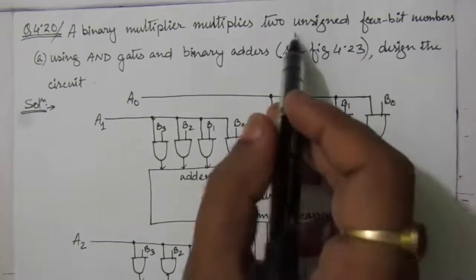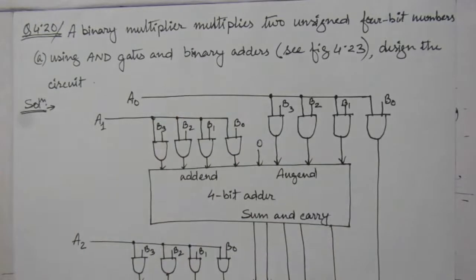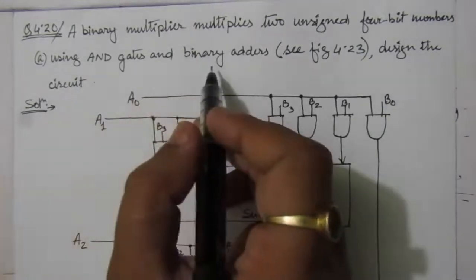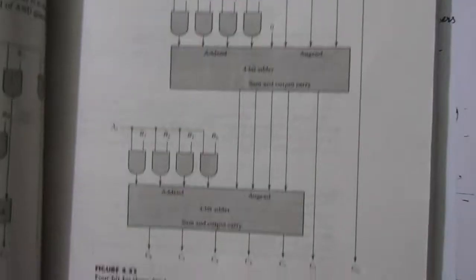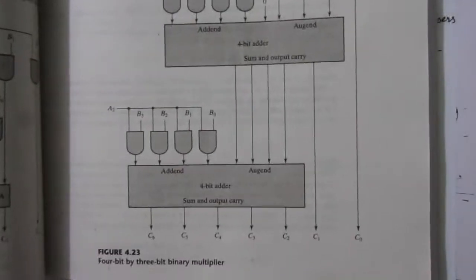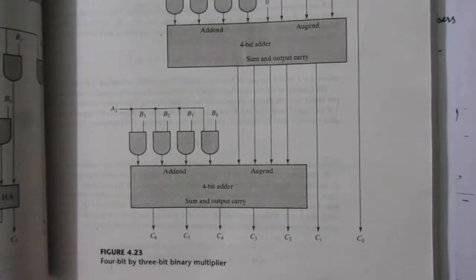The circuit will multiply two unsigned 4-bit numbers. That means we have to design a multiplier circuit that will multiply two 4-bit numbers using AND gates and binary adders. From inside the chapter, we can see figure number 4.23, which shows a 4-bit by 3-bit binary multiplier. But we have to design a 4-bit by 4-bit binary multiplier.